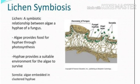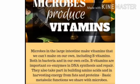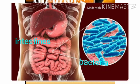The algal partner, being green, does photosynthesis and makes food. Similarly, microorganisms living in our intestines called probiotics are given food and shelter by us, while they supply certain vitamins and help in digestion of food.